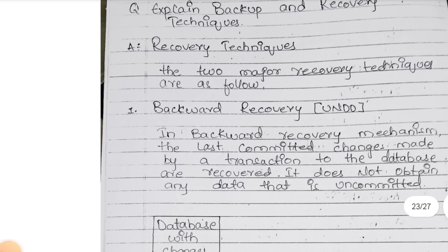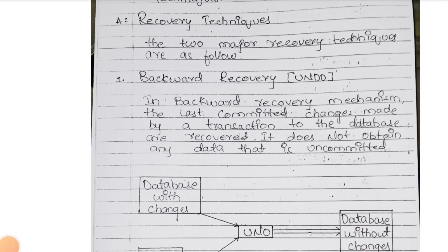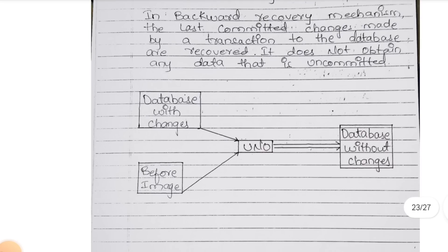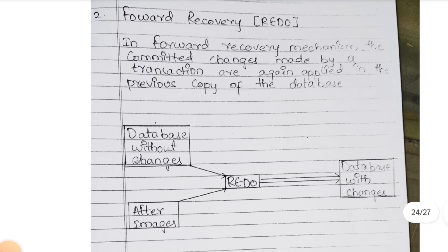Backup and recovery techniques — backup and recovery. Undo: for example, once you delete a photo it goes to the recycle bin or trash. That is the type of backup and recovery technique. Do you understand? Undo — next is REDO.